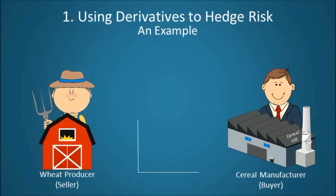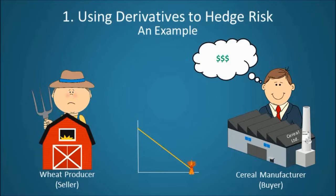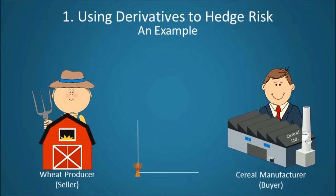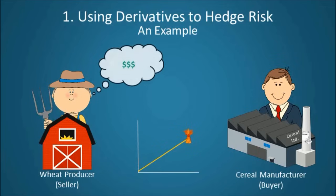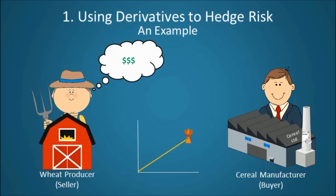A fall in the price of wheat is bad for wheat producers because they can get less money for their crops, but is good for cereal manufacturers because they can get one of their key inputs at a discount. On the other hand, an increase in the price of wheat is good for wheat producers because they can get more money for their crops, but is bad for cereal manufacturers because it increases costs.